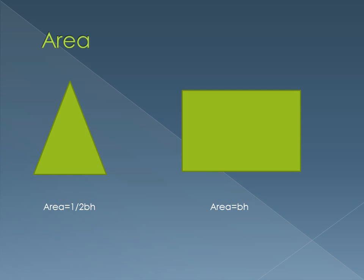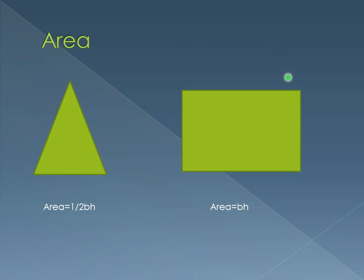All right, so the last thing I want to go over with you is area. Here are some basic areas. The area of a rectangle or a square is base times height. The area of a triangle is one half base times height, and that's because every triangle is half of a quadrilateral — that's where that formula comes from. It's just half of a rectangle. These are some basic formulas that you need to know, ones you've probably been exposed to already.